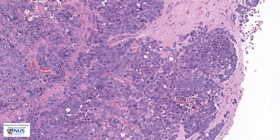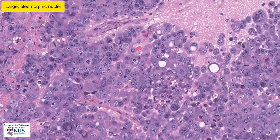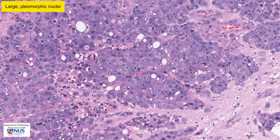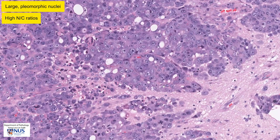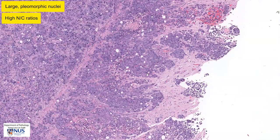Looking at the individual cells, we can see that the nuclei are very large. They are very pleomorphic — there's a lot of variation in size and shape between different cells. For example, this nucleus is very large compared to this one, which is much smaller. The NC ratios, or nuclear cytoplasmic ratios, appear to be relatively high, with many of the cells containing just a small amount of cytoplasm. This contributes to the blue appearance overall on low magnification, because the nucleus occupies so much of the cell.